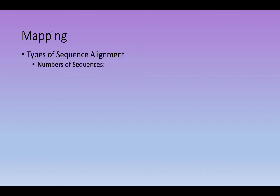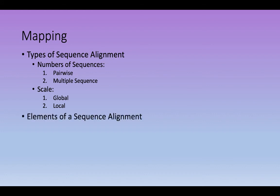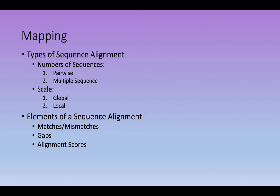We've already talked about sequence alignments — they can be pairwise or multiple, global or local. Elements include matches, mismatches, and gap insertions. We typically assign an alignment score based on a scoring system involving substitutions and gap penalties to determine which alignment is best.